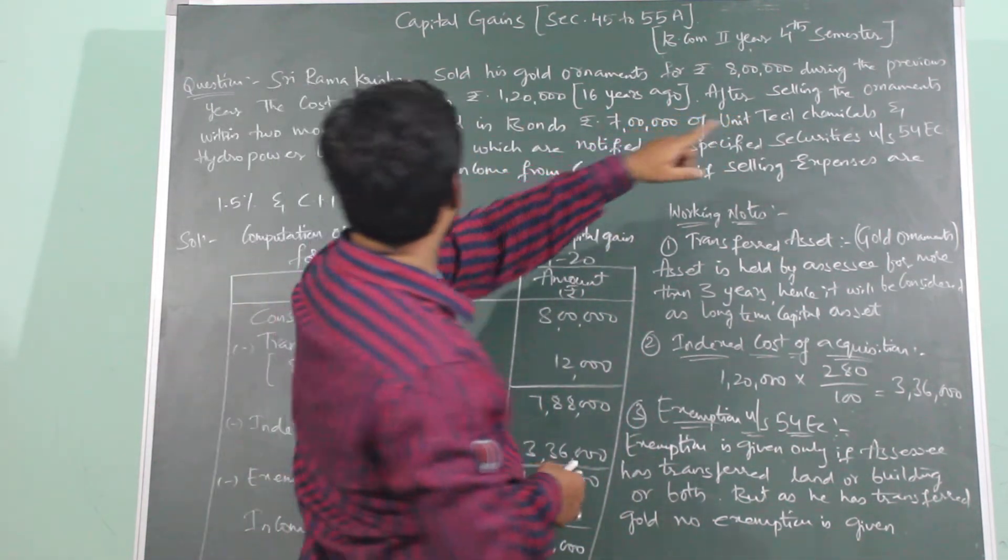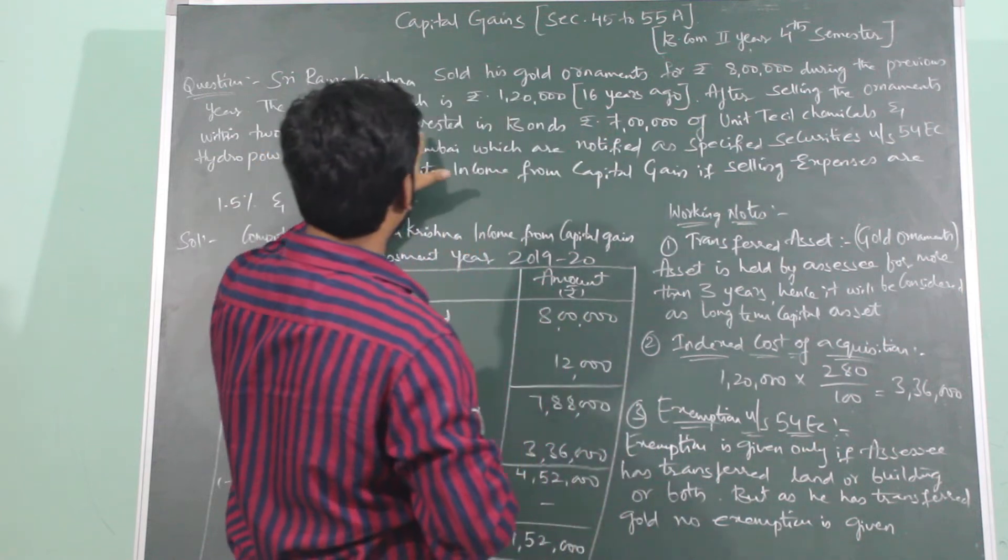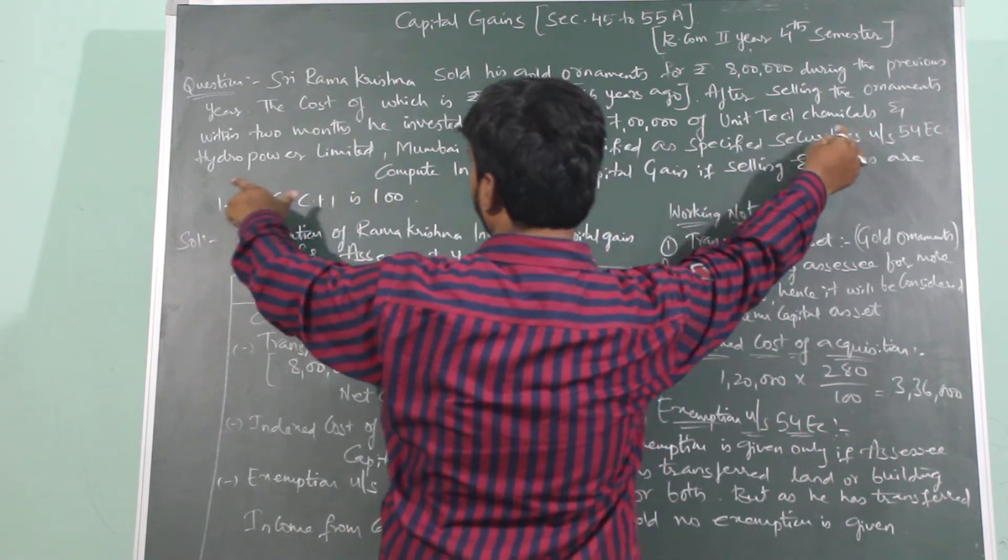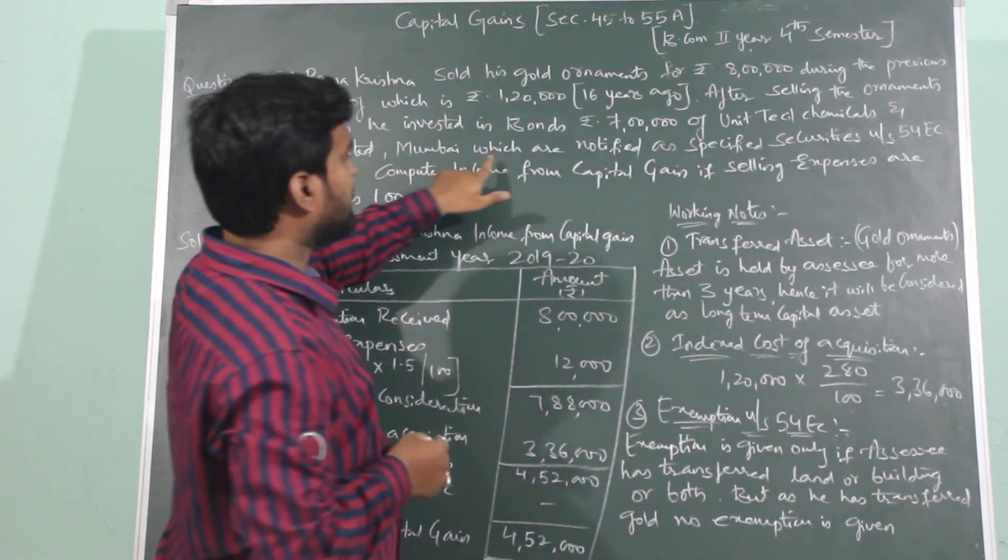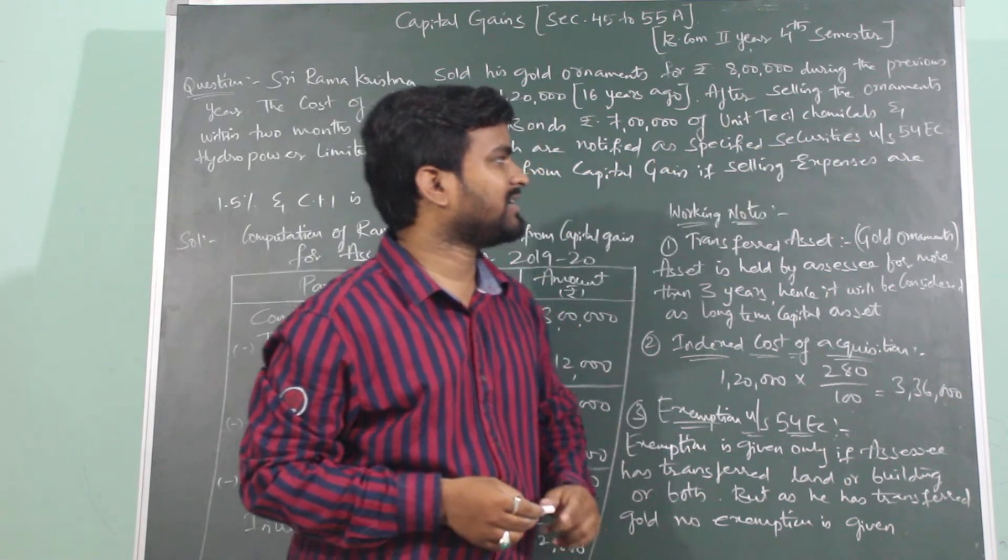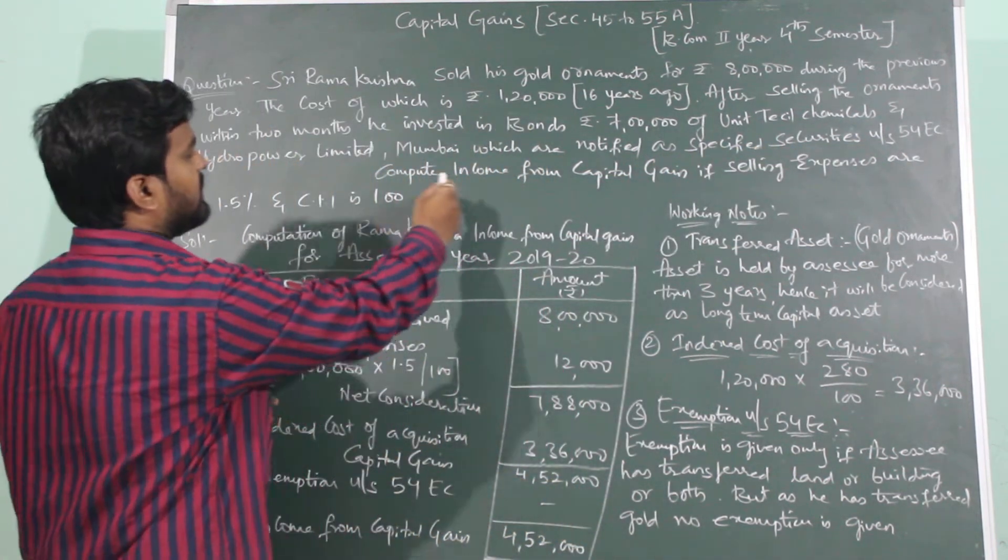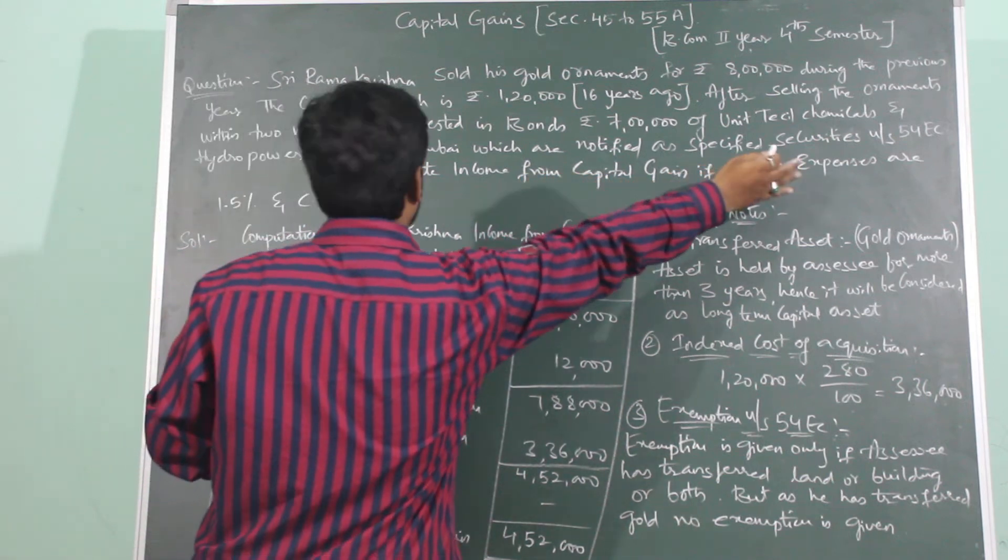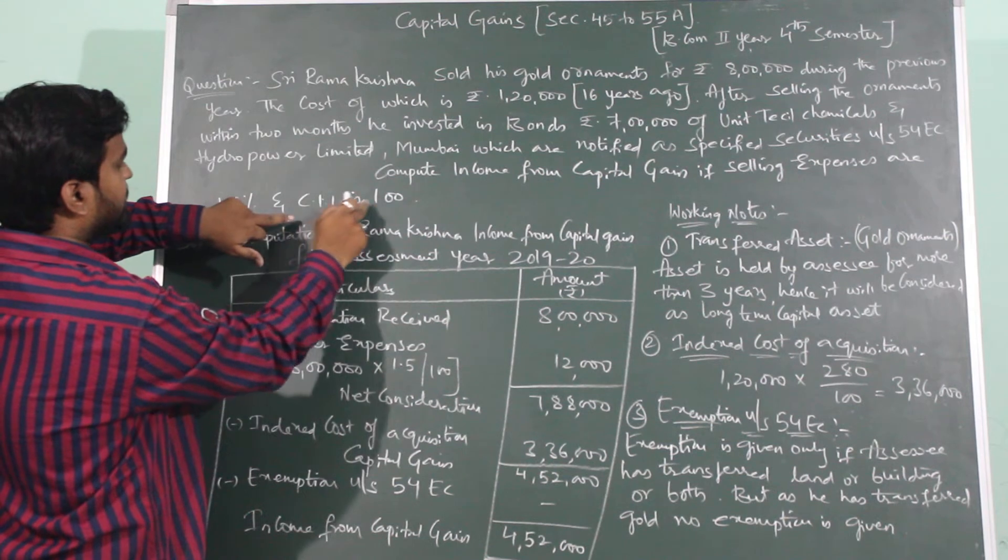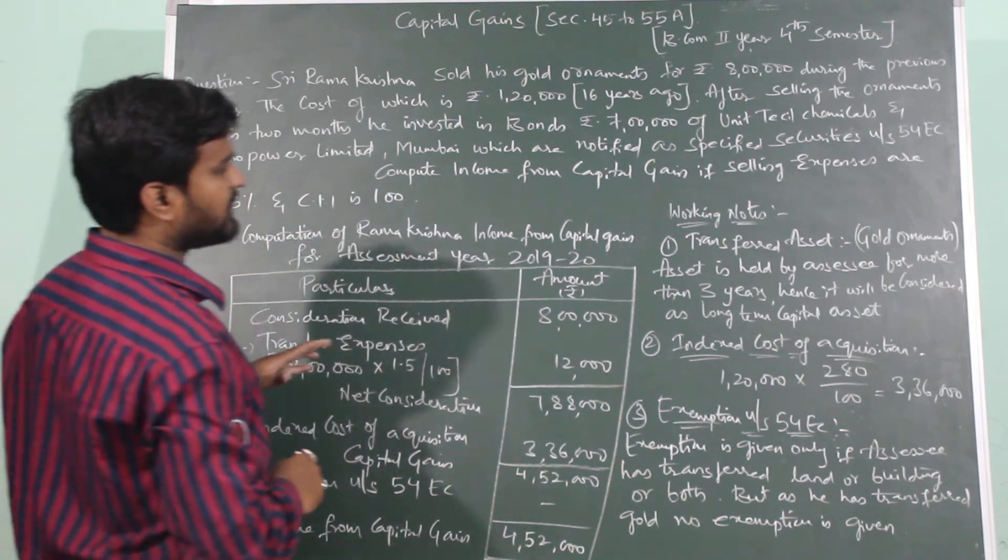After selling the gold ornaments, within 2 months he invested in bonds, Rs. 7 lakhs of Unit Tessel Chemicals and Hydropower Limited, Mumbai, which are notified as specified securities under section 54 EC. Compute income from capital gain if the selling expenses are 1.5% and cost inflation index is 100. Let us solve the problem.